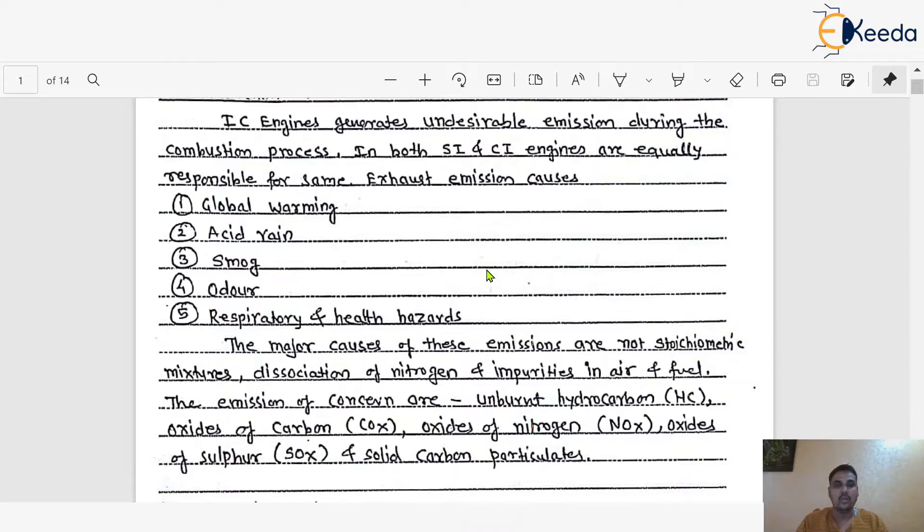And that heat energy we can use for doing some mechanical work. But within this particular engine operation, if abnormal combustion takes place inside the engine cylinder, as we already discussed about knocking and detonation, that is a kind of abnormal combustion. Because of such kind of abnormality, incomplete combustion takes place inside the engine cylinder, and that is one of the major and basic reasons of generation of exhaust emission.